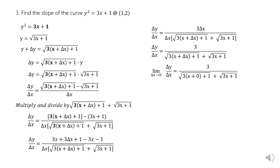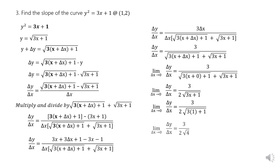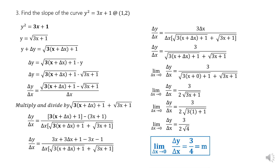Establishing the limit as Δx approaches 0, substitute Δx = 0 into the equation and simplify. The limit of Δy/Δx as Δx→0 equals 3 / (2√(3x + 1)), which is the derivative. To find the slope at point (1, 2), substitute x = 1. This gives 3 / (2√4) = 3 / (2·2) = 3/4. Therefore the slope of the curve y² = 3x + 1 at point (1, 2) is 3/4.